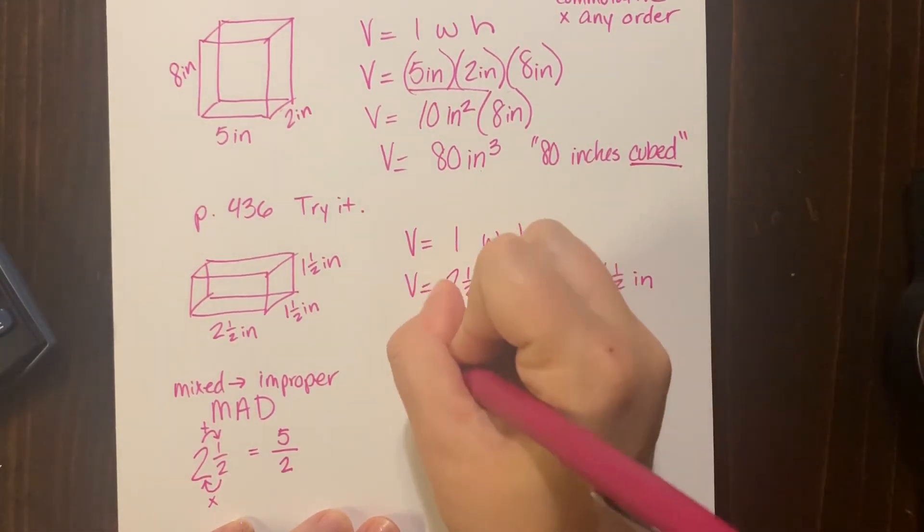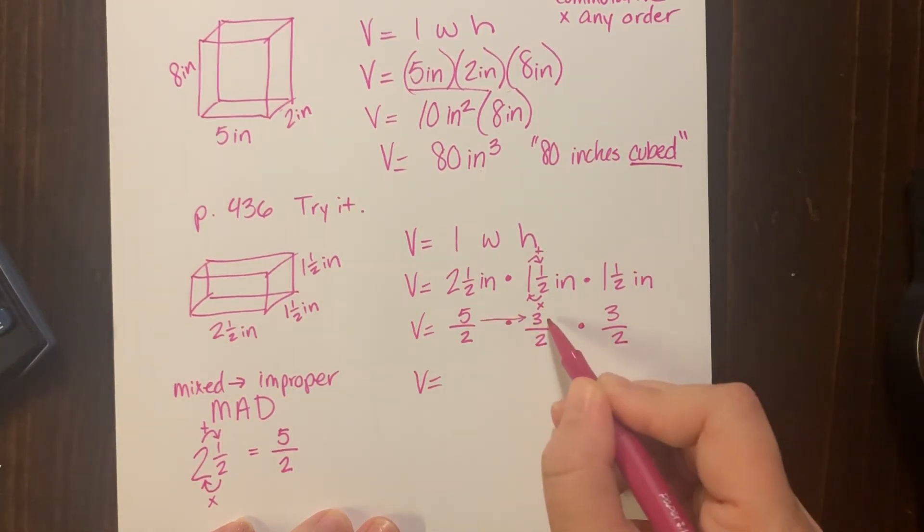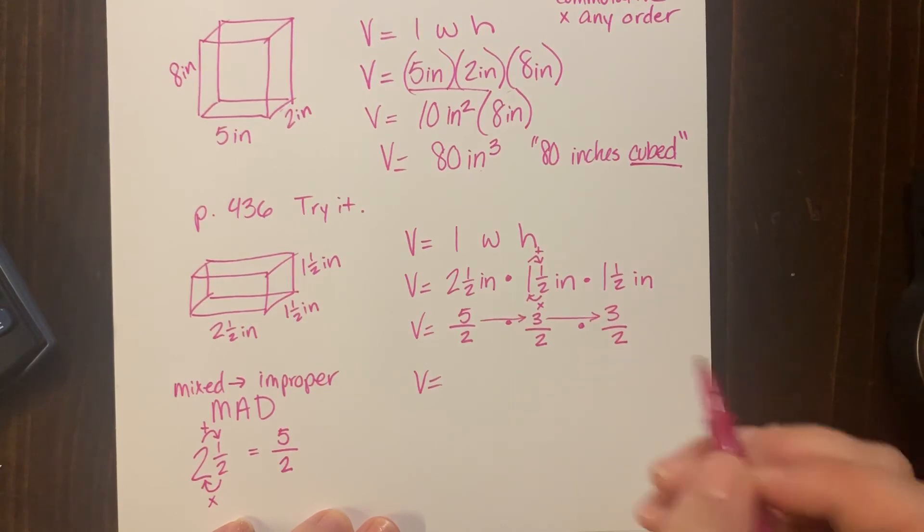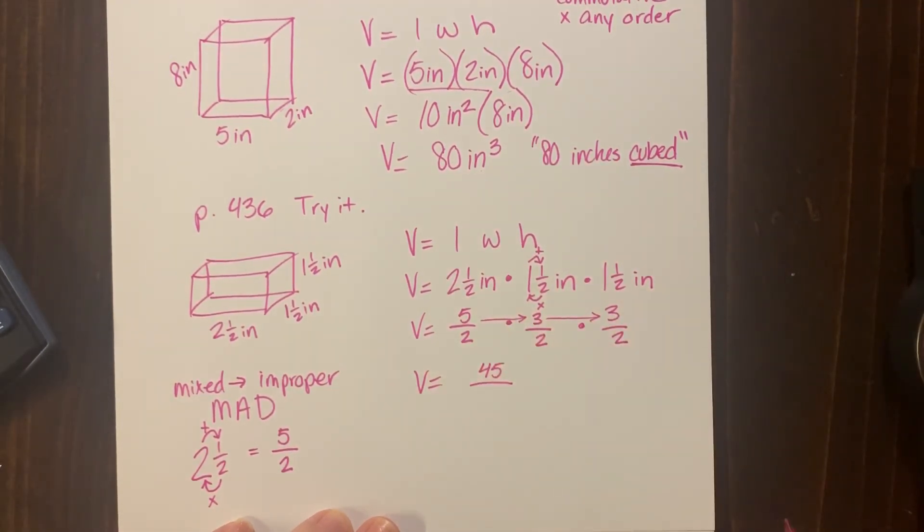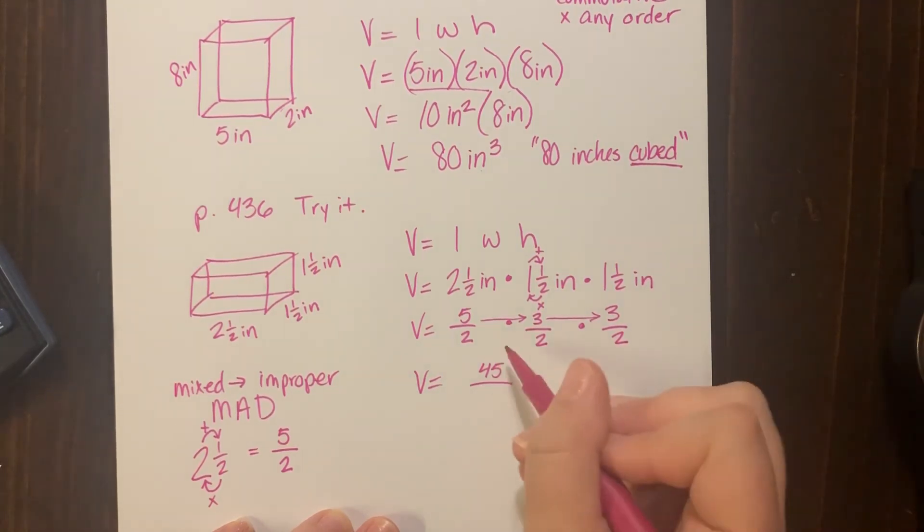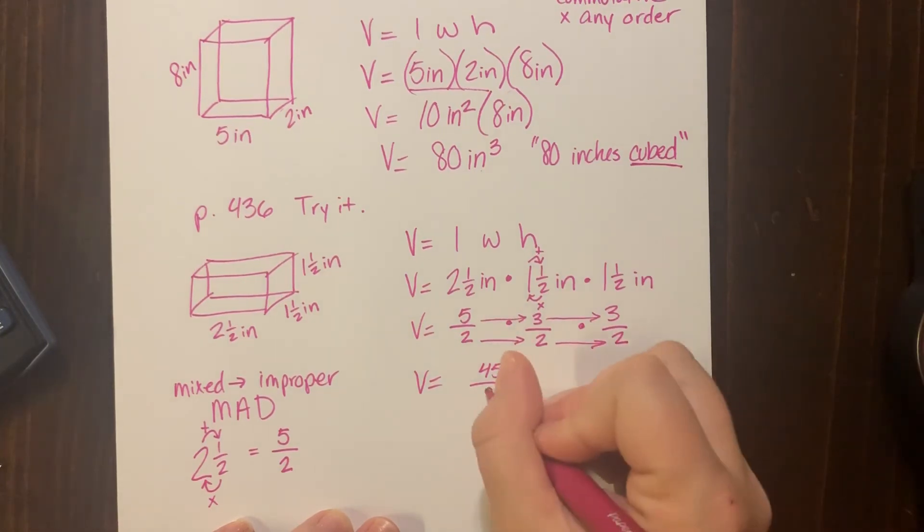All right, now who remembers how to multiply fractions? Oh, I heard you. We're going to multiply the numerators all the way across. So five times three is fifteen, times three, 45. Then we're going to multiply the denominators across: two times two, four, times two, eight.